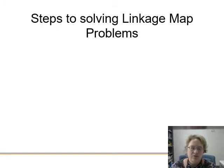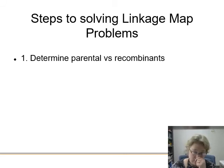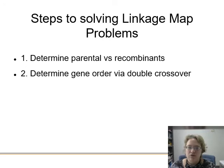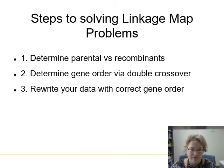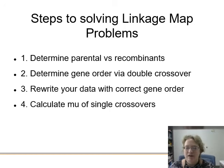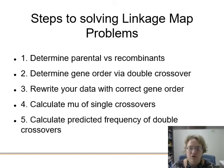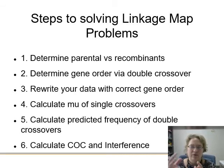So your steps when you want to solve one of these problems, just as we walked through, first, you look at your table of offspring and determine where are the parentals, the ones that haven't changed from the heterozygote there, and the recombinants. And you sort them into groups. You determine your gene order via the double crossover, which one happened the least frequently. Therefore, that gene is in the middle. Rewrite everything in the correct gene order, pair everything up. So you've got your pairs of recombinants. Then you calculate the map units of the single crossovers, and then you calculate the predicted frequency of double crossovers, which we'll do on the next slide. And that's where we get to our COC and interference. We haven't done this part yet. Let's do that right now.